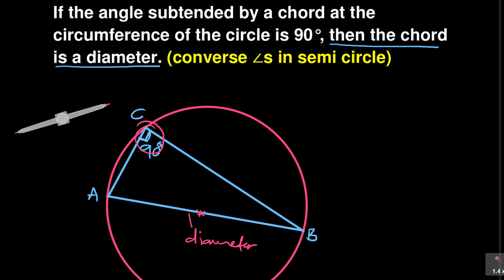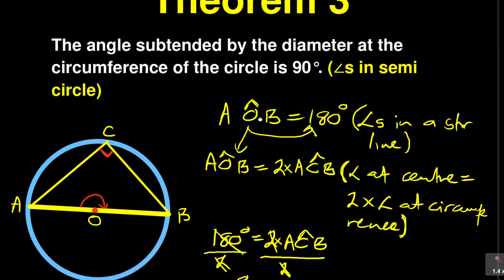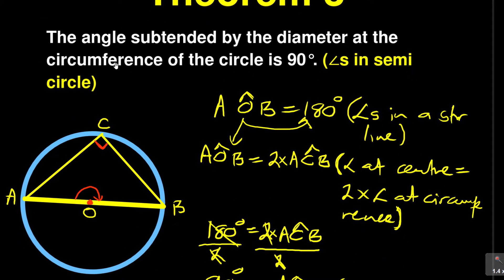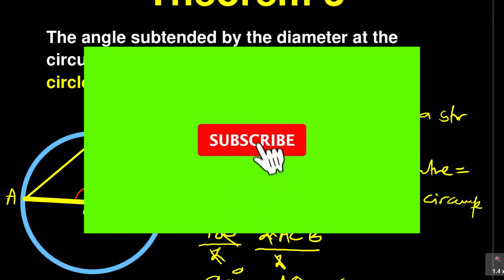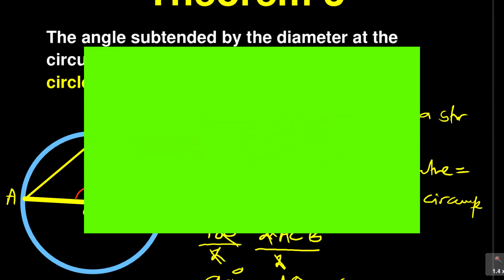So we've come to the end of our lesson where we were looking at theorem number three. In brief, theorem number three says angles in a semicircle — meaning the angles subtended by the diameter at the circumference of a circle is 90 degrees. Very easy to prove. Have your line AB. Angles in a straight line is 180. Remember angle at center is equal to two times that angle at the circumference — and that's how you prove that. Join me again when I'm looking at theorem number four. Remember three things to do: subscribe, turn on the notification bell, share the channel and comment. Thank you.